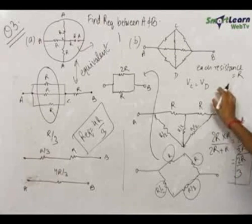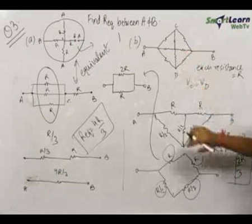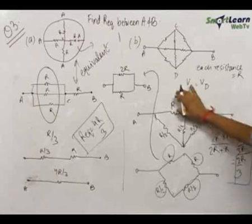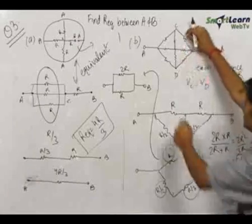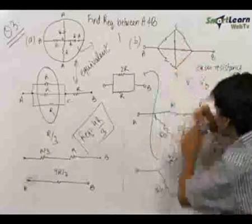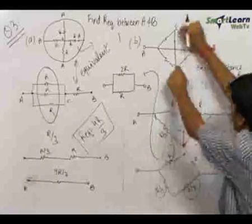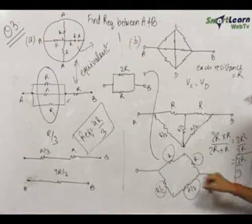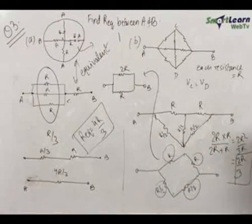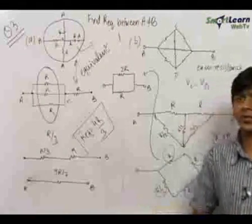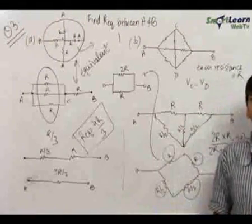So the final answer for the equivalent resistance in this case came out to be 2R/3. We just used two tricks: if the potential of two points are the same, we join those two points by folding the loop; and we used the concept of the Wheatstone bridge to find out the final answer as 2R/3 in the second case and 4R/3 in the first case.